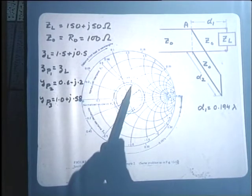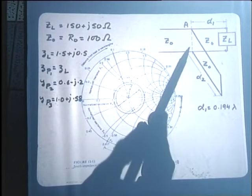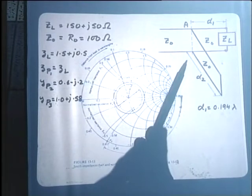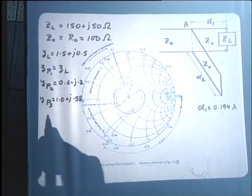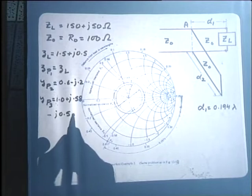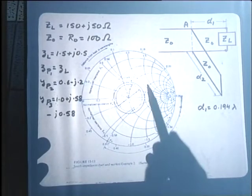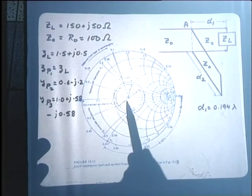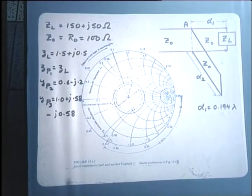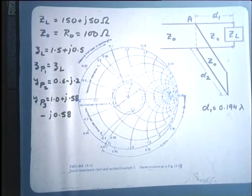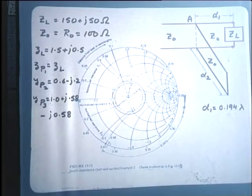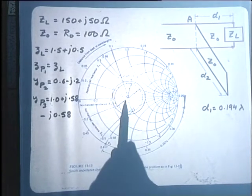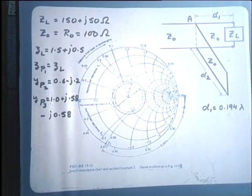Once we have reached P3, we can determine what input susceptance the stub must provide. For the transmission line to appear matched at plane A after the stub is added, the stub susceptance must be −j0.58, so that we move on the constant conductance circle from P3 to point P4, where the conductance is 1 and there is no susceptance. This is how the Smith chart provides a graphical perspective on the problem.